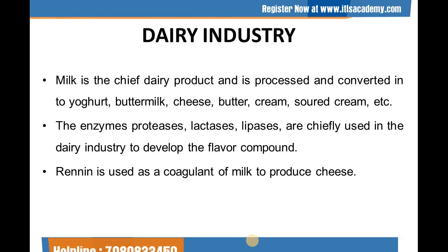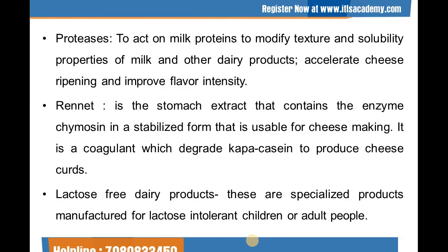Renin is used as a coagulant of milk to produce cheese. Proteases act on milk proteins to modify texture and solubility properties of milk and other dairy products, accelerate cheese ripening, and improve flavor intensity. Rennet is the stomach extract that contains the enzyme chymosin in a stabilized form usable for cheese making. It is a coagulant which degrades kappa-casein to produce cheese curds. Lactose-free dairy products are specialized products manufactured for lactose-intolerant children or adult people.